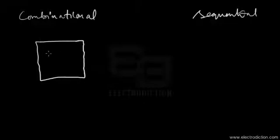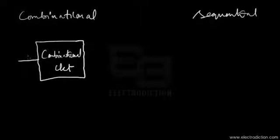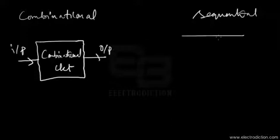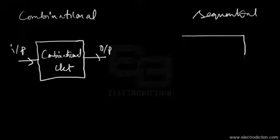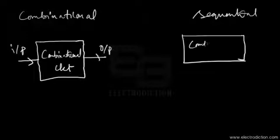We've covered combinational and sequential circuits in previous tutorials. Let me give you a short difference between the two with some block diagrams. This box represents the logic diagram or block diagram of a combinational circuit, with an input terminal on the left and an output terminal on the right.